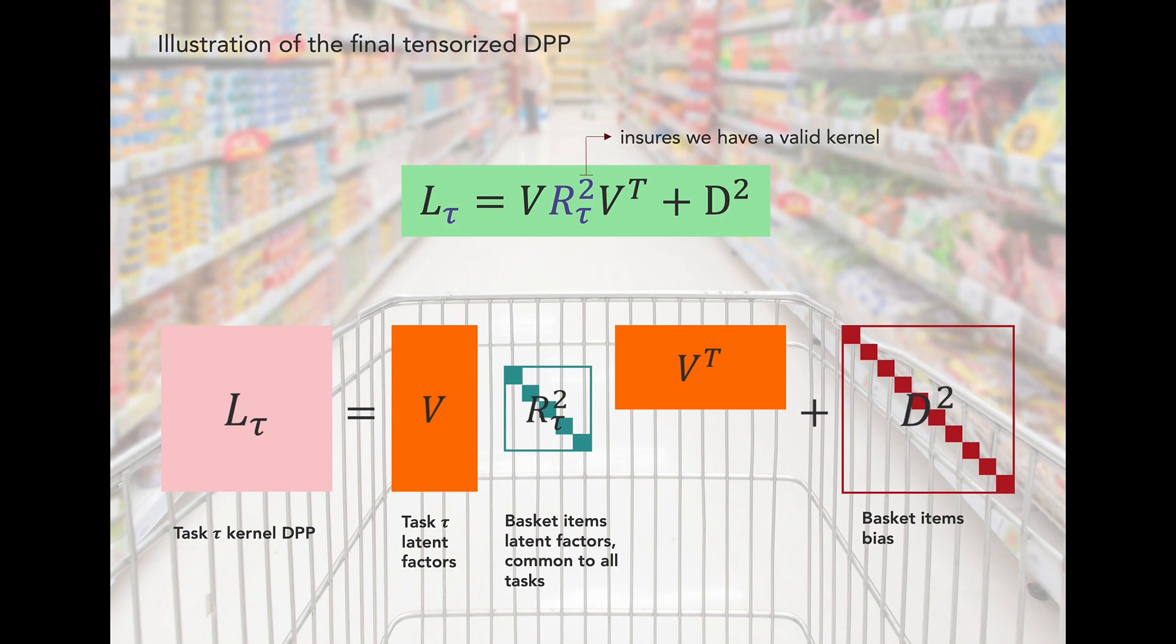By construction, the diagonal D matrix prevents the model from returning a zero probability for large baskets. And we also use square exponents for the R and D terms to ensure that we have a positive semi-definite kernel, a valid PSD kernel.